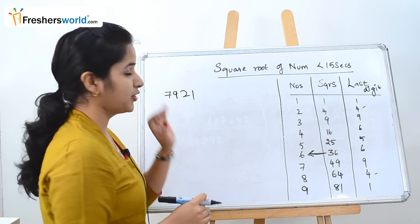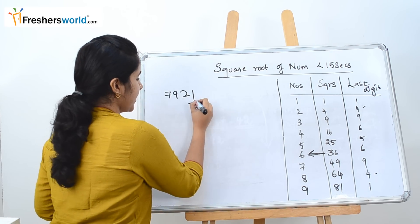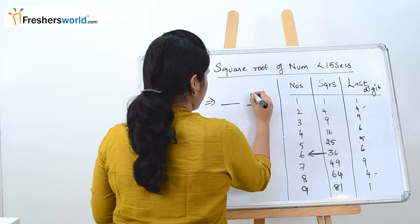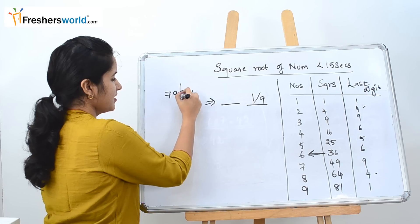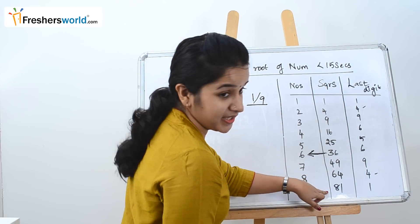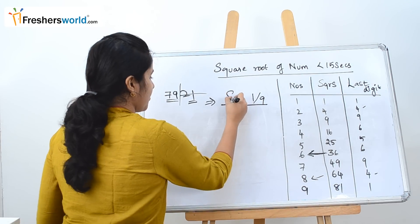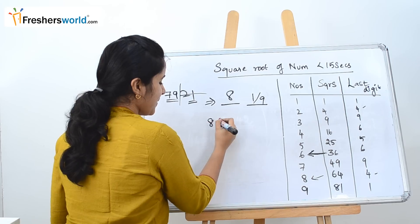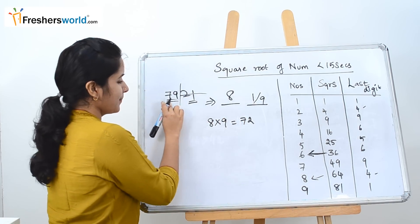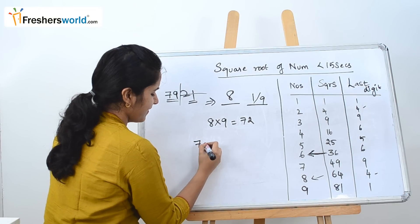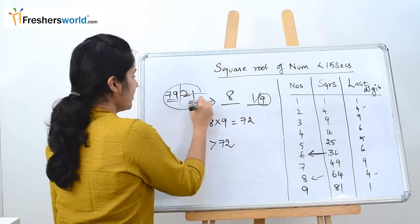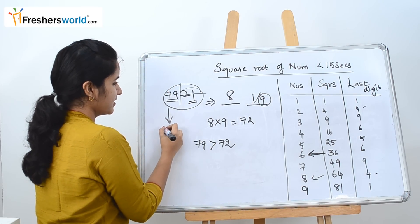The next question is 7921. Take the last digit: 1 falls between 1 or 9 in the last digit column, so it can be 1 or 9. Ignore the last 2 digits and take 79. It falls between 64 and 81, so take the smallest square root value, which is 8. Multiply 8 by its next number 9 to get 72. Since 79 is greater than 72, take the large number. So the square root of 7921 is 89.